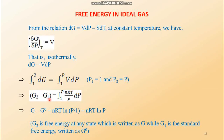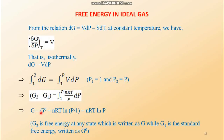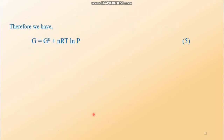Since state one is the standard state, we write G1 as G⁰ and G2 as G. So G minus G⁰ equals nRT ln P, which rearranges to equation five: G equals G⁰ plus nRT ln P. Dividing both sides by n gives the molar free energy: G-bar equals G⁰-bar plus RT ln P.